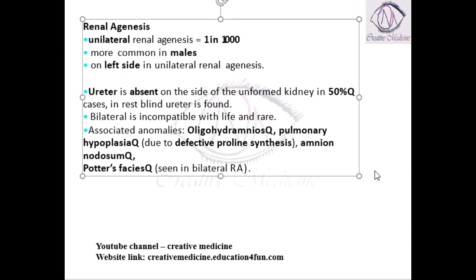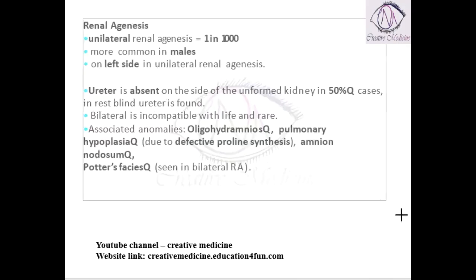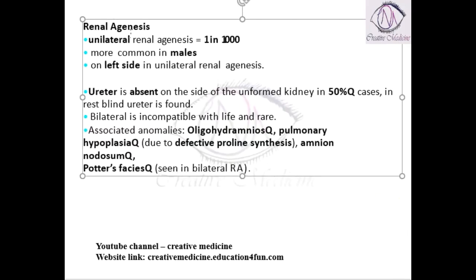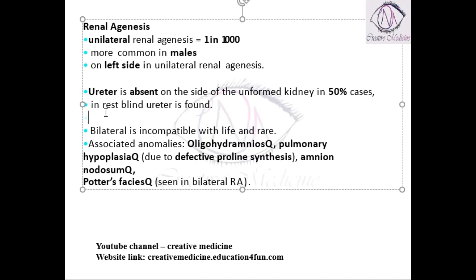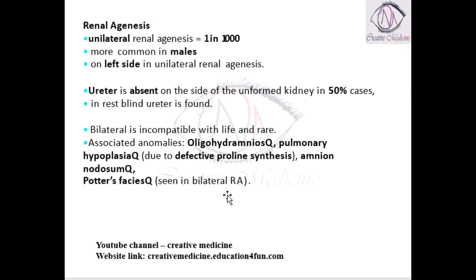Renal agenesis is nothing but an absent kidney. If the kidney is absent, then in 50% of cases the ureter on that same side is also absent. In the other 50%, a blind ureter may be present.